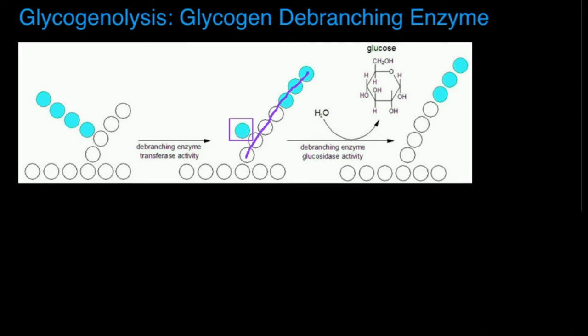So like we said, these three right here get transferred onto a nearby chain, which eliminates the need for glycogen phosphorylase, and then the glycogen debranching enzyme can now act on this glucose unit in the box.